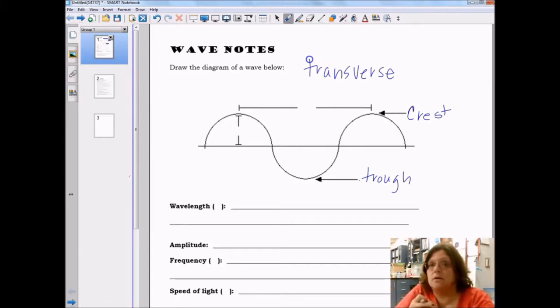Those are push-pull waves like an accordion or a slinky. S waves are transverse waves just like these.